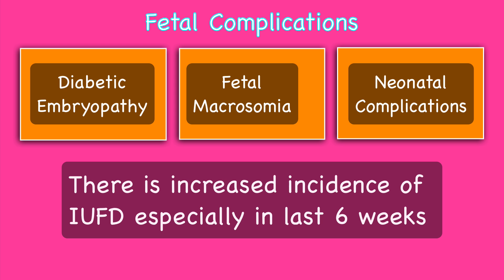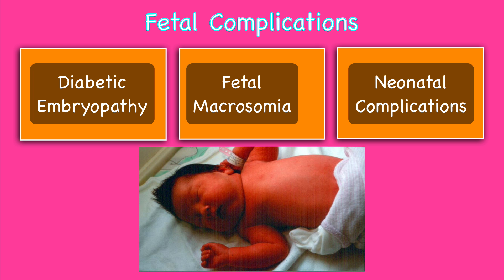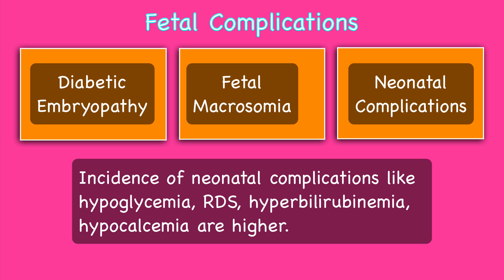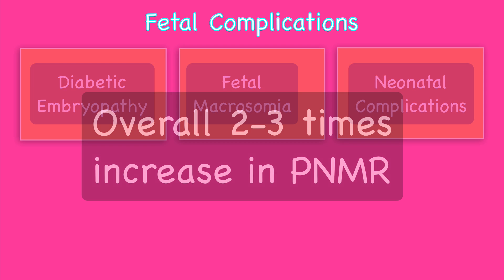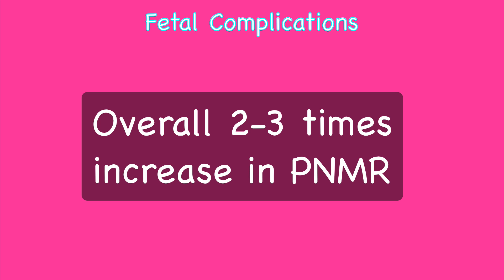There is an increased incidence of intrauterine fetal death, especially in the last six weeks of pregnancy. There is a 30 to 40 percent incidence of fetal macrosomia if GDM is untreated. Incidence of neonatal complications like hypoglycemia, respiratory distress syndrome, hyperbilirubinemia and hypocalcemia are also higher. All these fetal complications contribute to an overall two to three times increase in the perinatal mortality rate. GDM also has important long-term consequences, which will be discussed in part two.